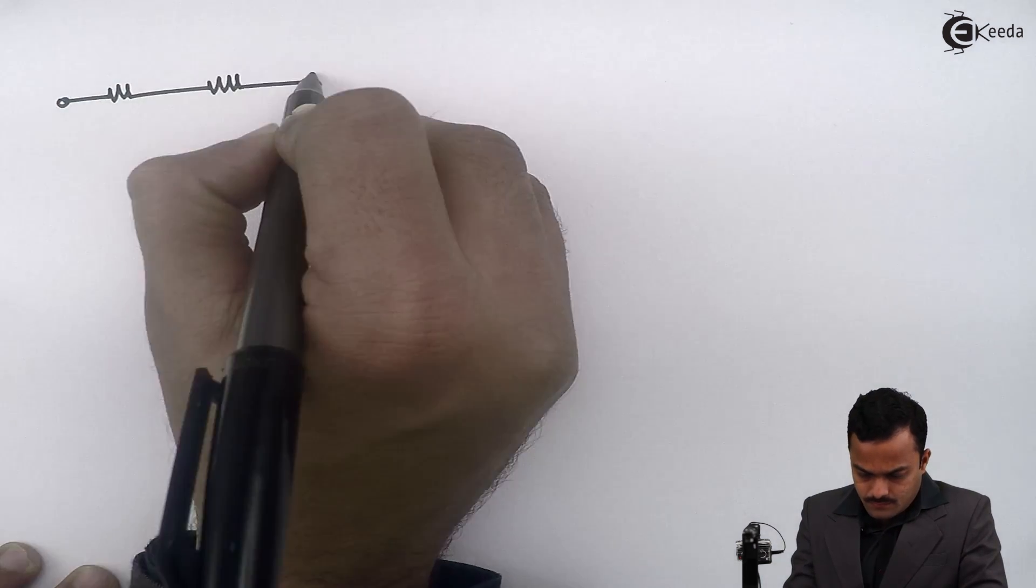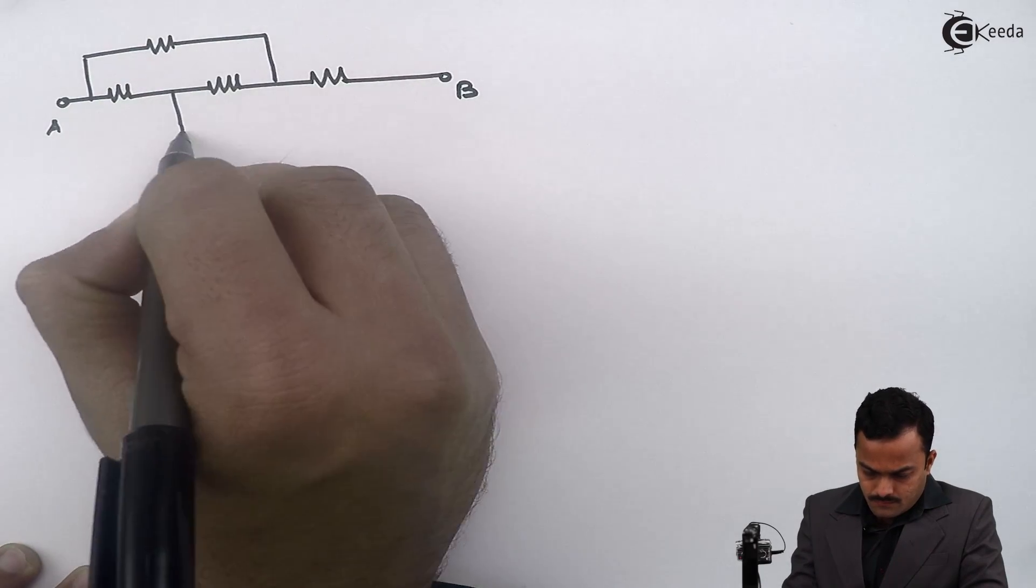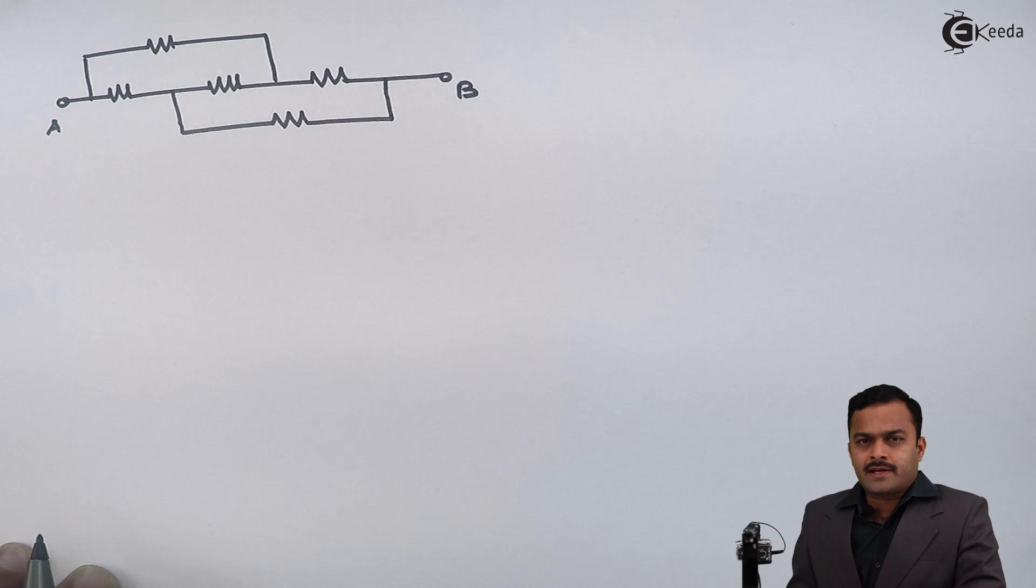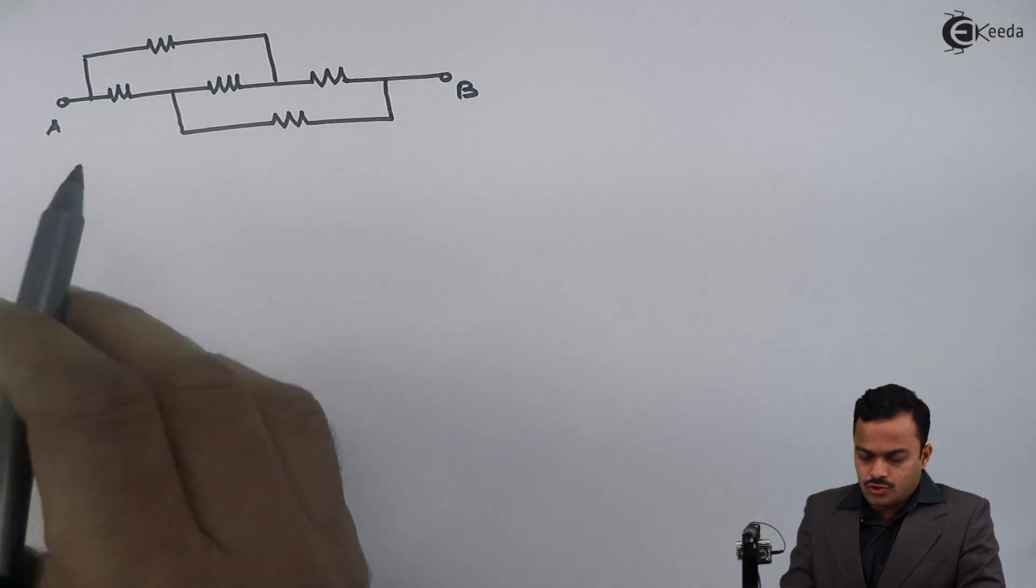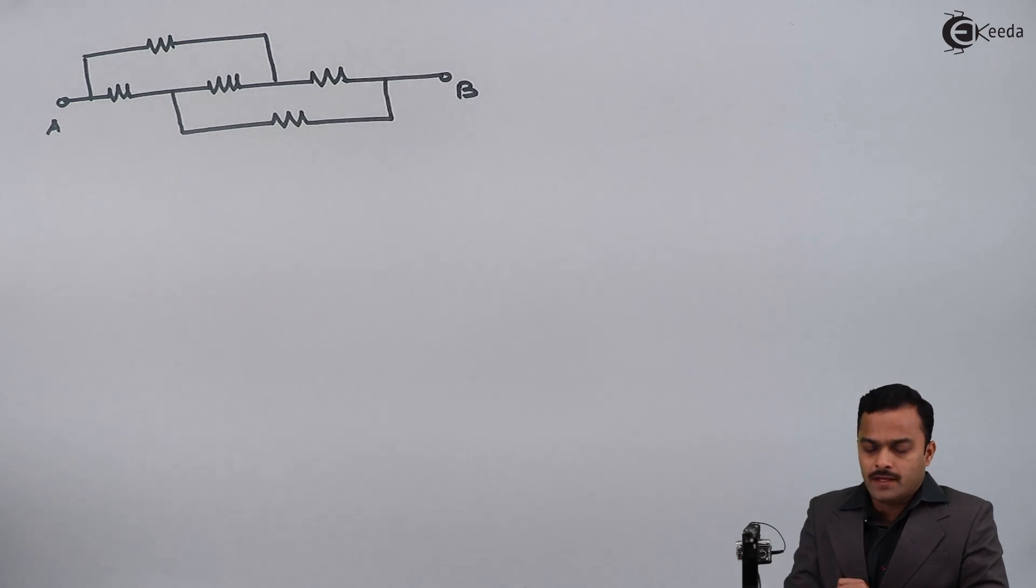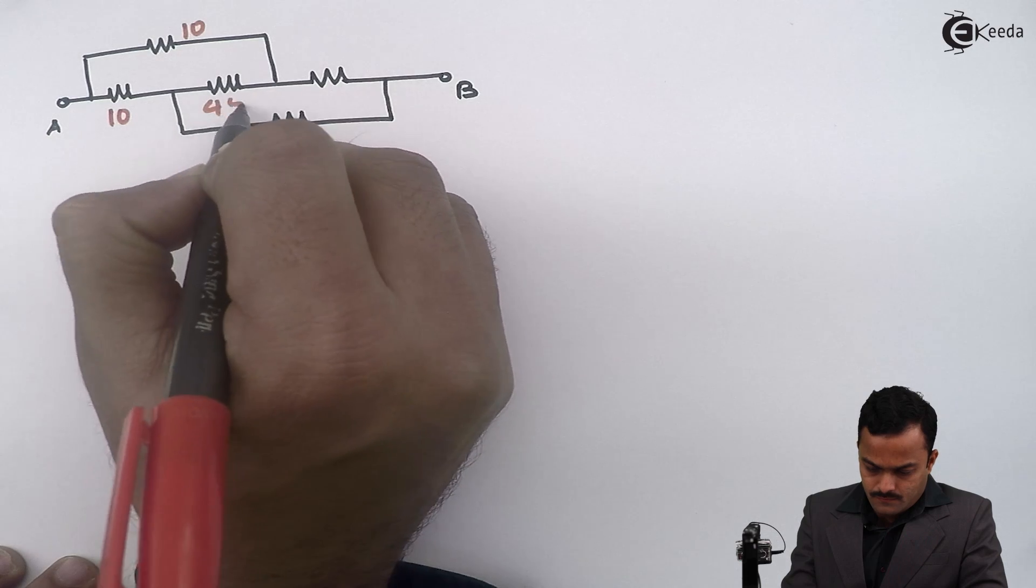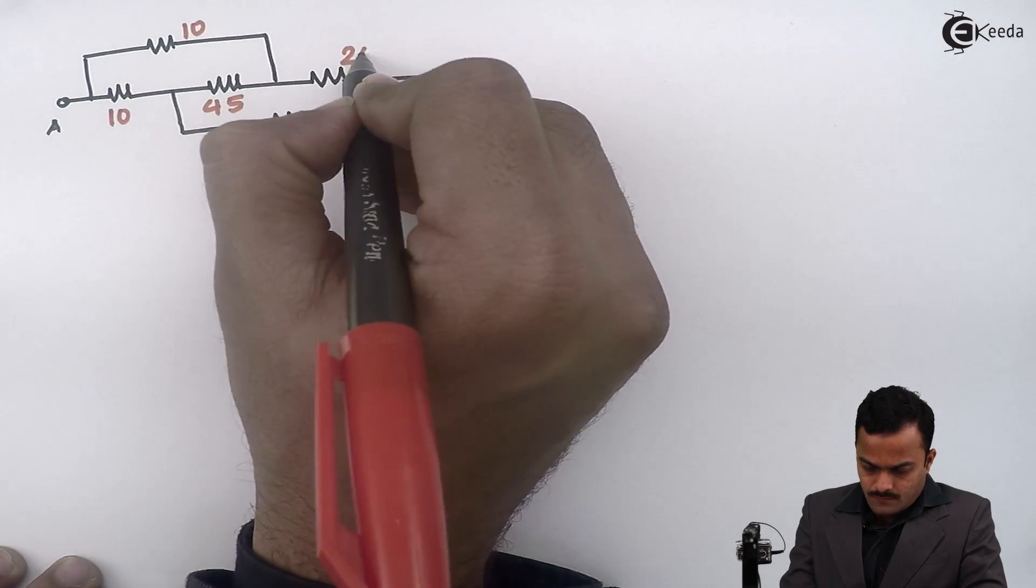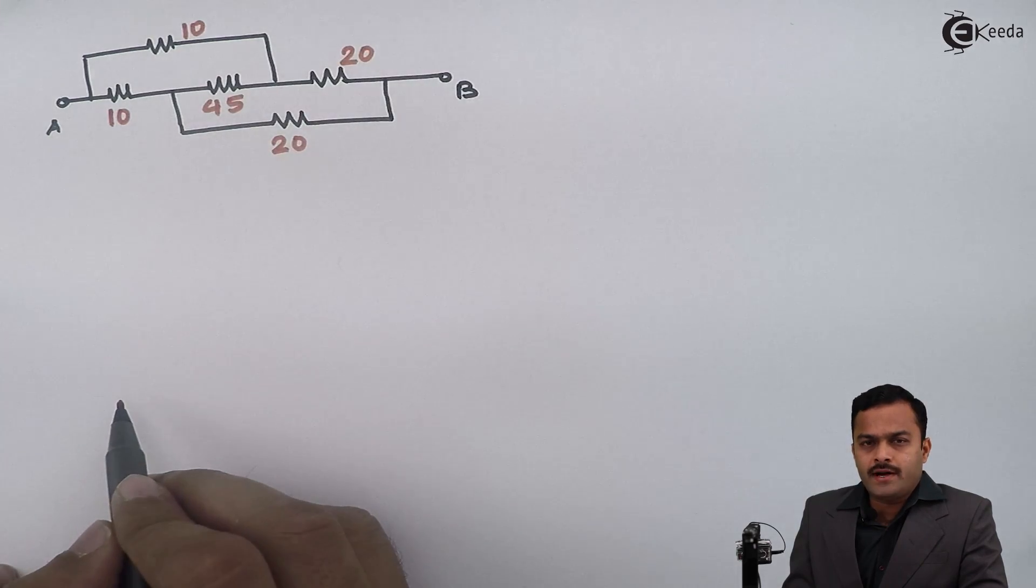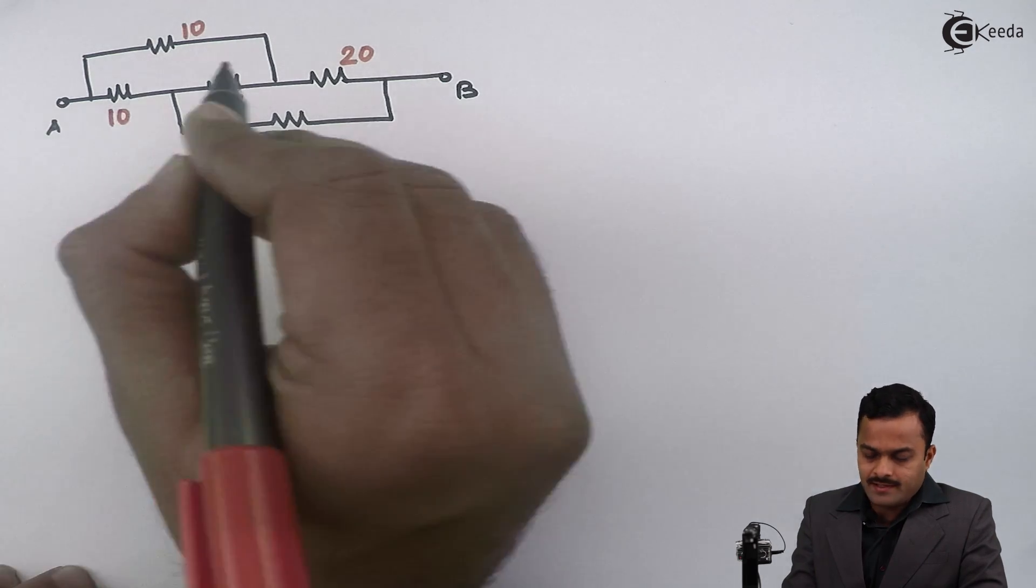So let's take a numerical problem. Here I have taken a problem having so many resistors connected. Let's give the values to them. The objective is to find out equivalent resistance between points A and B.